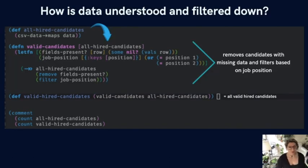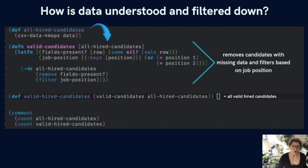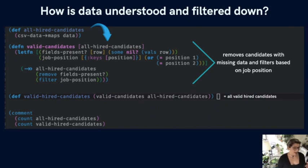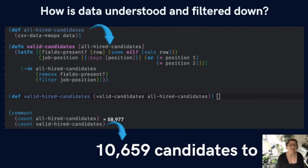I created a function called valid-candidates that takes the list of all hired candidates and removes anyone with a missing field of relevant data. The authors also found that after removing people with incomplete fields, only sales representative and customer service representative positions contained enough observations to draw useful conclusions. In the Northwestern report, the initial value of hired candidates was 58,977. After applying these filters, they were left with a total pool of 10,659 valid candidates to study as a sample.